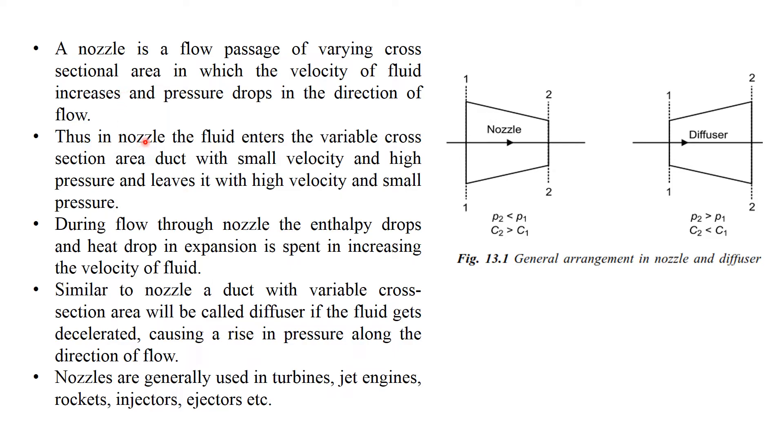Thus in nozzle, fluid enters the variable cross sectional area duct with small velocity and high pressure and leaves it with high velocity and small pressure. So section 1 and section 2, fluid flows and the velocity increases and at the same time the pressure drops.